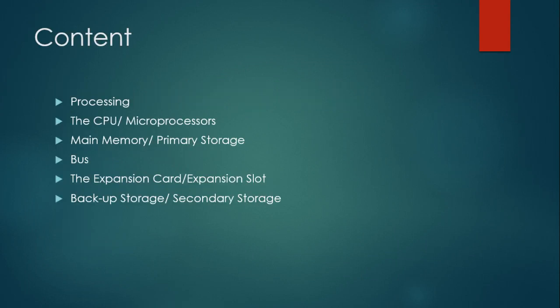The following content we are going to cover in this chapter: number one, processing; number two, CPU and microprocessors; number three, main memory and primary storage; number four, bus; number five, expansion card and expansion slot; number six, backup storage or secondary storage.